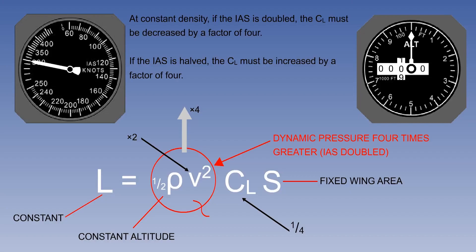To make this principle easy to understand, we can say that TAS will change in proportion to IAS at a constant altitude. This is, however, not true of speeds above Mach 0.4.